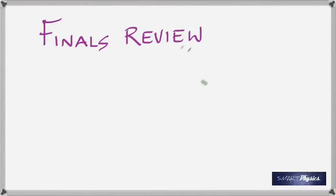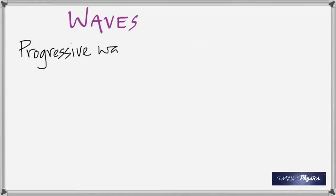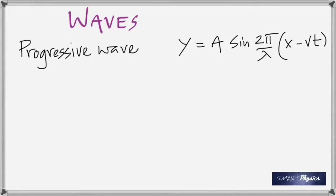Welcome to the finals review — smile, it's good to smile. We start with waves. You need to know the equation for a progressive wave. One way to write it is y equals A sine of (2π/λ)(x − vt), or equivalently A sine(kx − ωt). In this equation, y is the displacement, A is the amplitude, and λ is the wavelength.